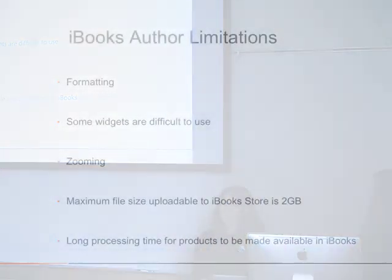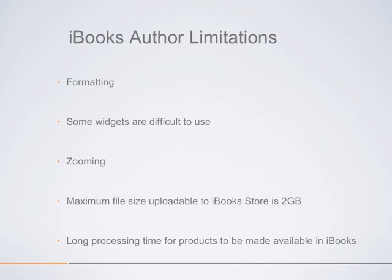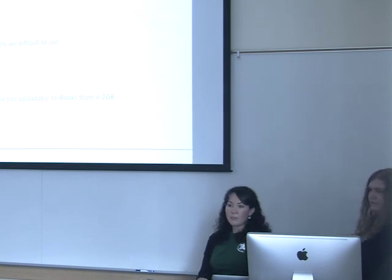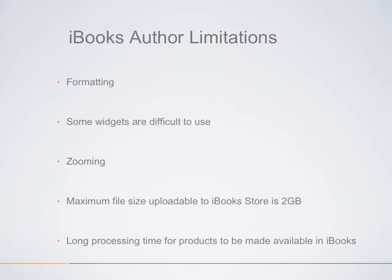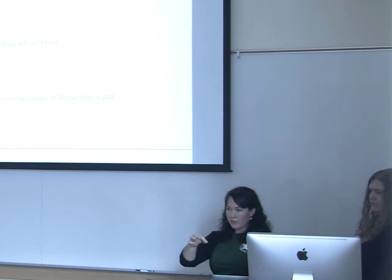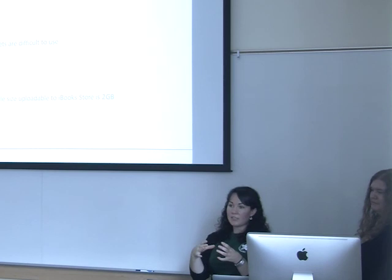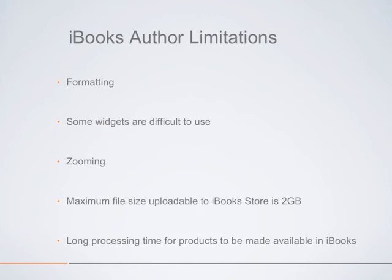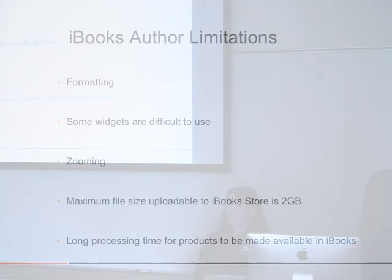Some limitations of the iBooks authoring software include formatting constraints — there's a set template size, and with atlases that have a lot of information, fitting everything within that space can be challenging. Some widgets can be difficult to use, especially SVG and HTML, which require more specialized skills. Zooming is also a limitation: you can maximize an image to the full tablet size, but if you want to zoom in further using two fingers, the image snaps back to its original size when you let go. Additionally, the maximum file size for uploading to the iBooks store is two gigabytes, which wasn't enough for our graphics-heavy atlas.